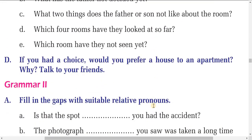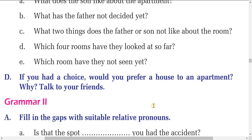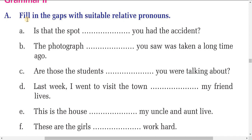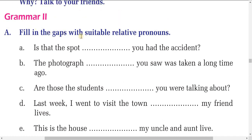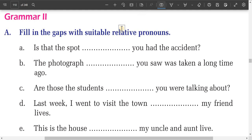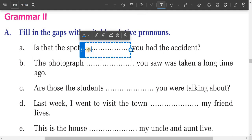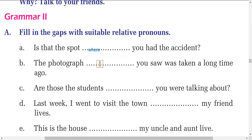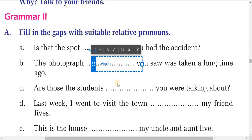Now let's do the grammar exercise — fill in the gaps with suitable relative pronouns. The relative pronouns are: who, which, and where. For places we use 'where,' for things we use 'which' or 'that,' and for people we use 'who.' So in the first sentence about a sport or place, you write 'where.' After 'photograph,' since it is a thing or object, you write 'which.'